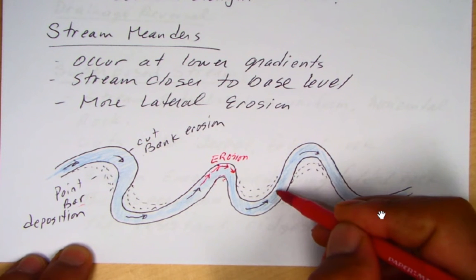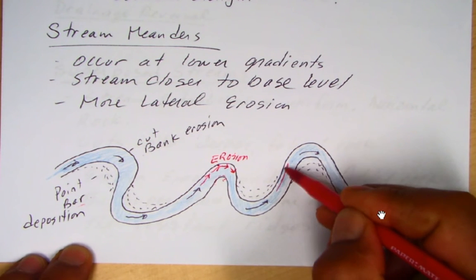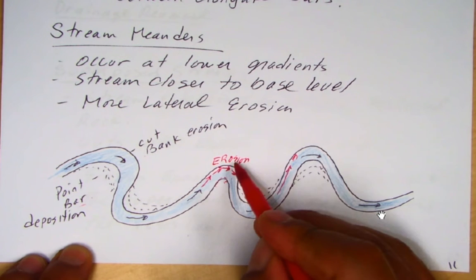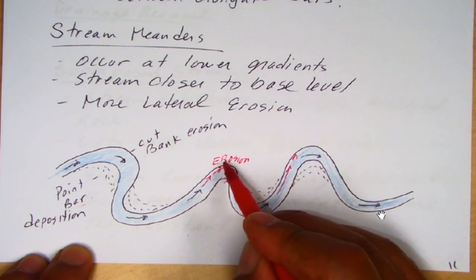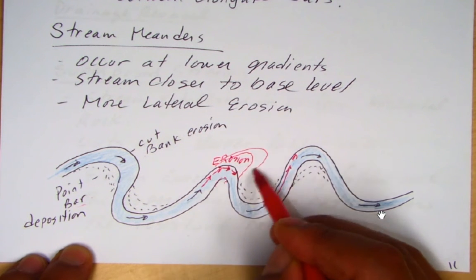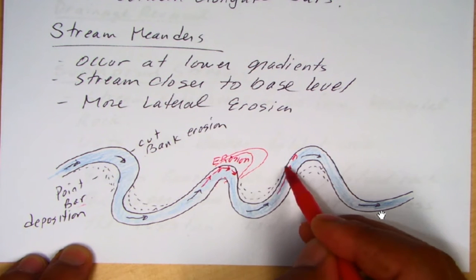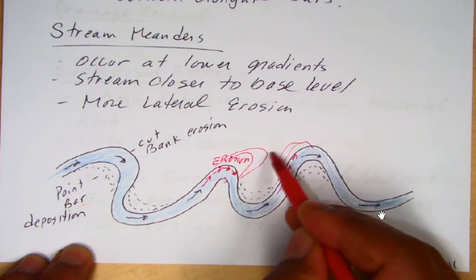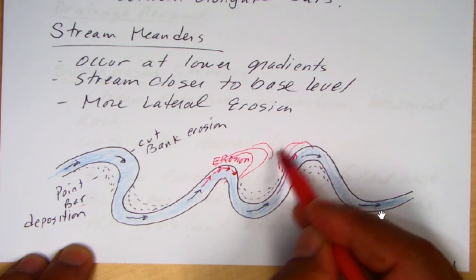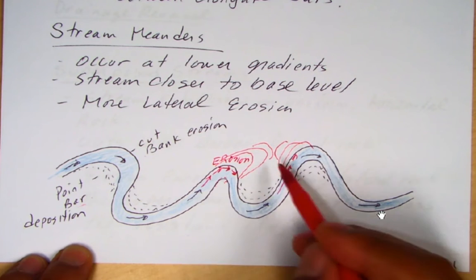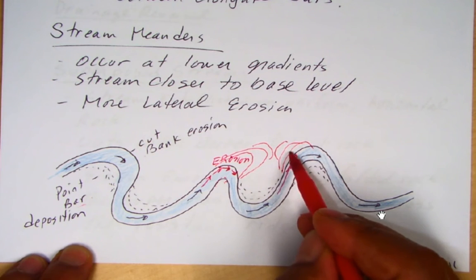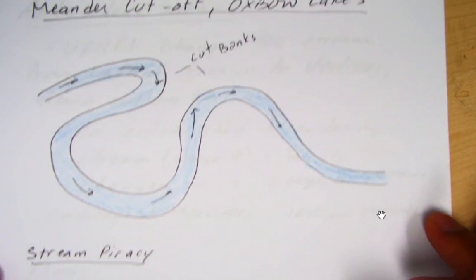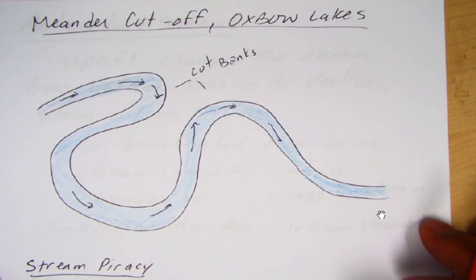Over time, as we see more erosion on the cut banks, the channel starts weaving, and eventually the two cut banks will join into a meander cutoff. Let's look at an example of meander cutoff and the formation of oxbow lakes.